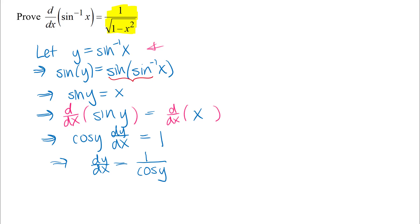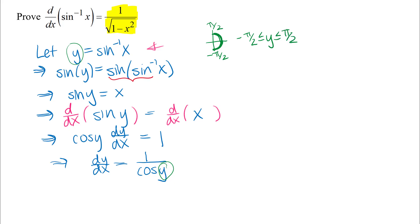At the beginning of the problem we have y equals sine inverse of x. One important thing to remember about the inverse trig functions is that there are restrictions on inputs and outputs. The sine inverse function outputs angles that are between negative pi over 2 and pi over 2 — shown on the right half of a unit circle. So the y in our original statement must be between negative pi over 2 and pi over 2, as part of the definition of the sine inverse function so that it's actually a function.